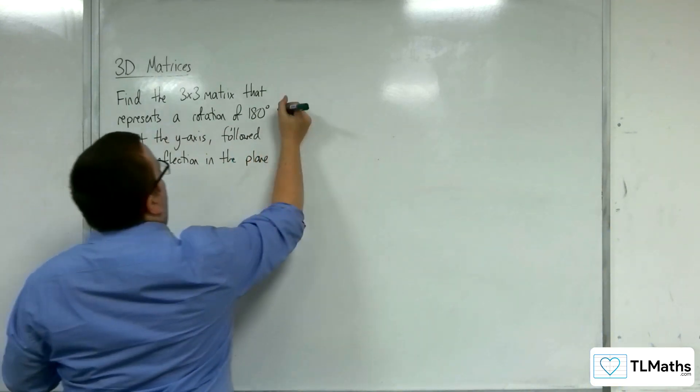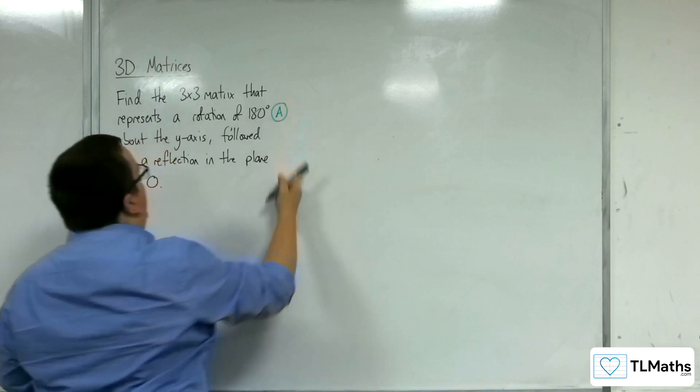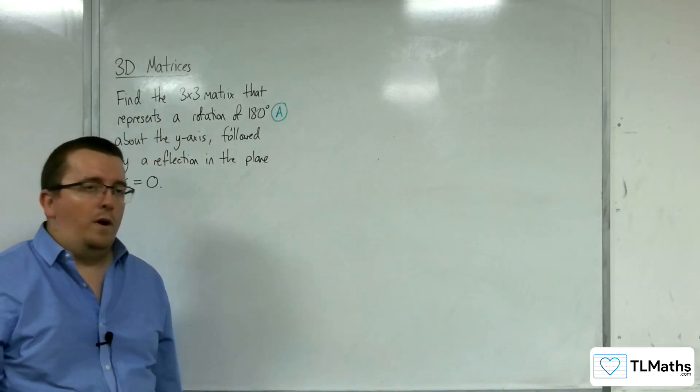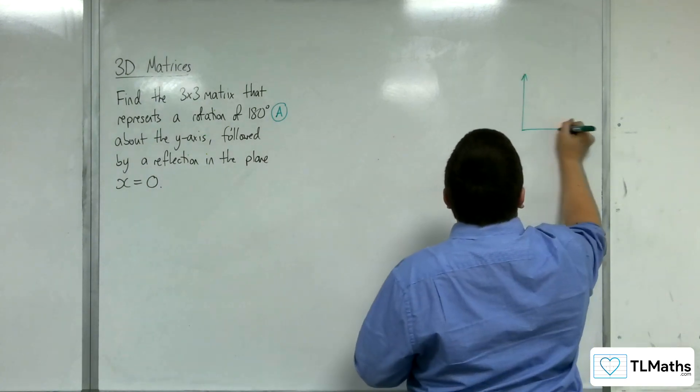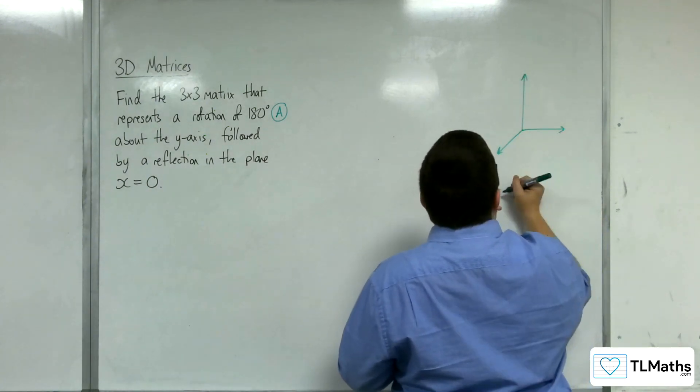So, firstly, I'm going to focus on this matrix I'm going to label A, that is the rotation of 180 degrees about the y-axis. Okay, so I'm going to draw myself a little diagram so that I can visualize what's going on.